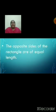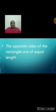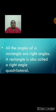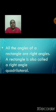The opposite sides of the rectangle are of equal length. Side AB is equal to side DC, and side BC is equal to side AD. All the angles of a rectangle are right angles, like a square. A rectangle is also called a right angle quadrilateral.